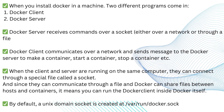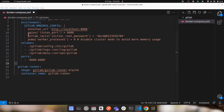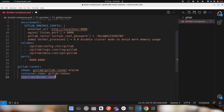Since Docker can communicate through a file and can efficiently share files between hosts and containers, you can run the client inside Docker itself. The Docker daemon listens for Docker Engine API requests. There are three types of socket: Unix, TCP, and fd. By default, a Unix daemon socket is created at the path '/var/run/docker.sock'. If you have Docker installed on your host machine, you can inspect this socket file.